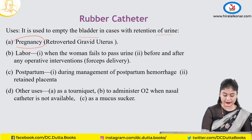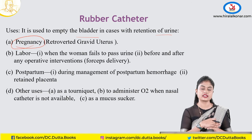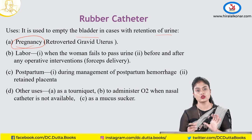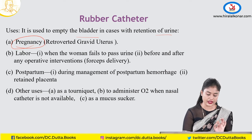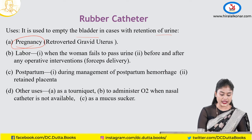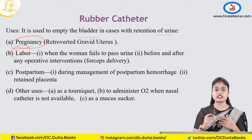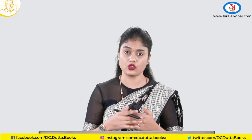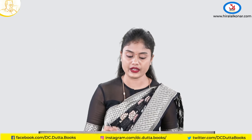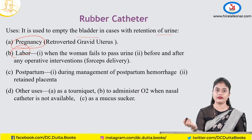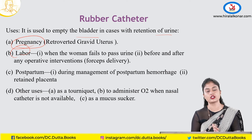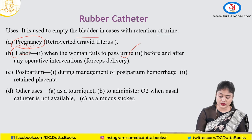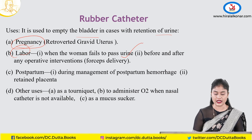For example, in pregnancy, when a retroverted gravid uterus causes compression on the urethra and the patient is not able to pass urine, you can use rubber catheter for immediate draining. In labor, when the patient is 7 to 8 centimeters dilated and cannot walk to the washroom, you can use it for temporary bladder relief — draining the bladder also helps good descent of the head.